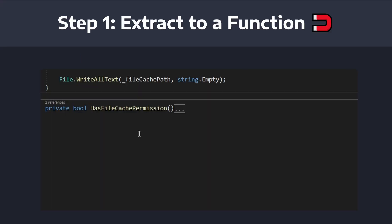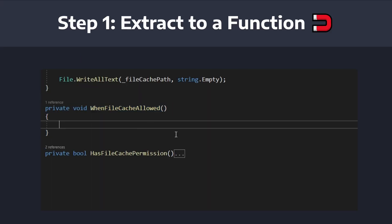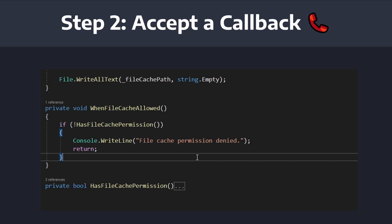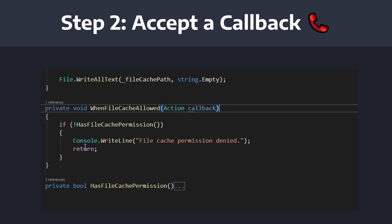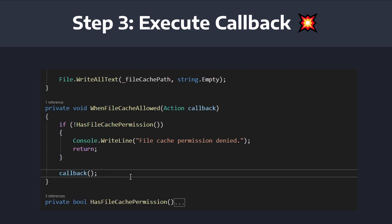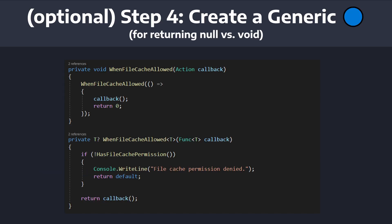That's when I decided to turn the tables a little bit and do some experimentation. I extracted this guard clause block of code to a function — the typical approach for trying to reduce duplication. Then I would pass a callback to this guard clause function, and if the precondition passed in the guard clause, we would execute the callback. Not really revolutionary stuff, but for this use case, I was pretty satisfied with the result.